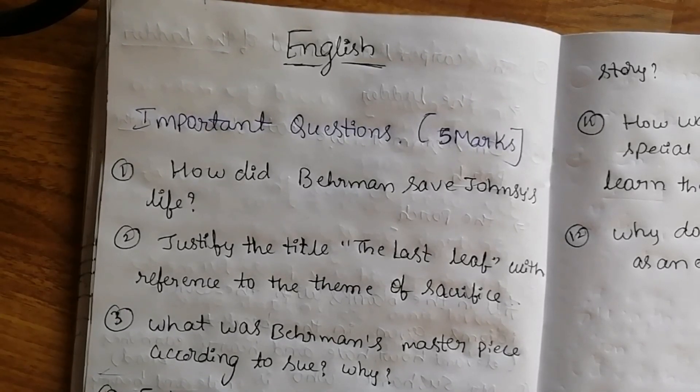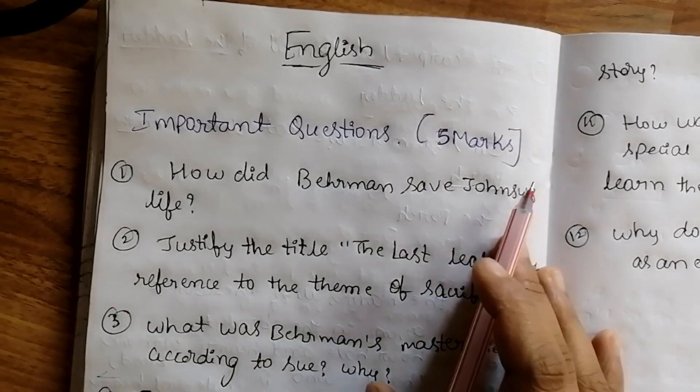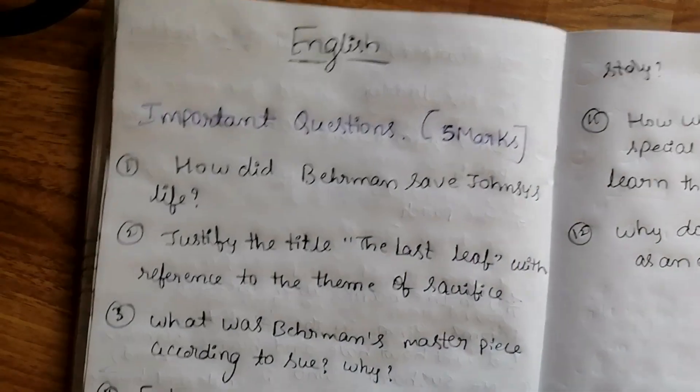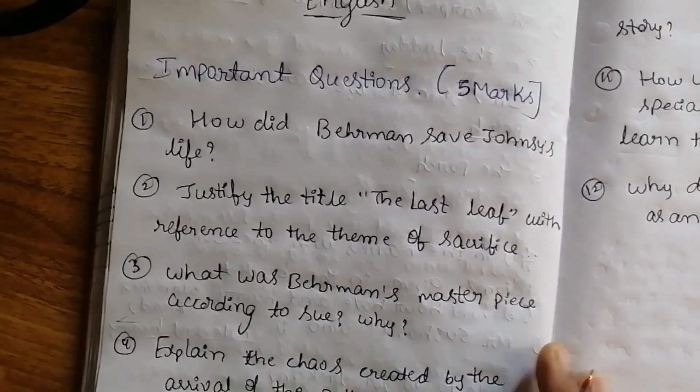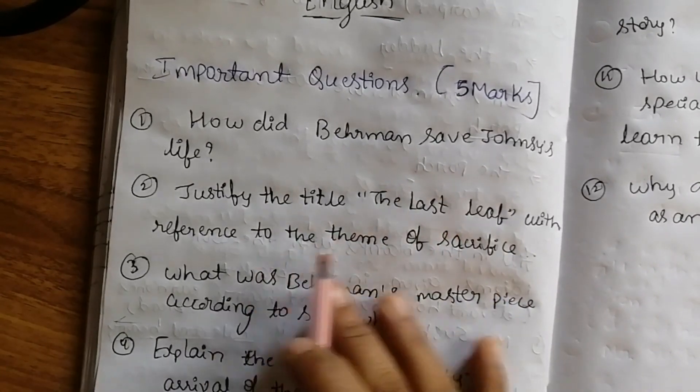Hi friends, in this video let us see today's first time English important questions of five marks. Let us see which are the important questions. First question: How did Behrman save Johnny's life?